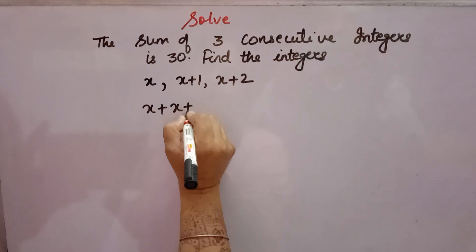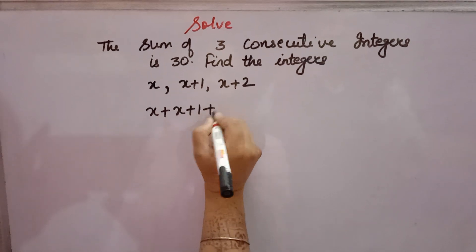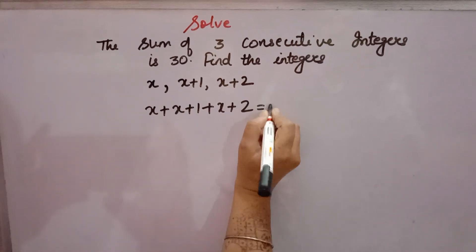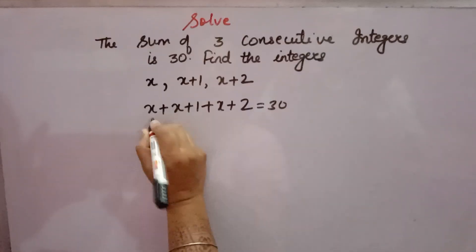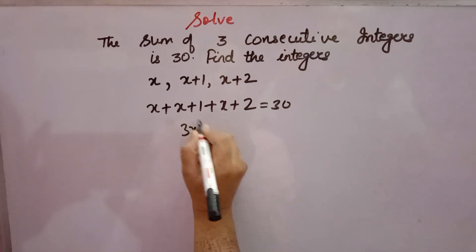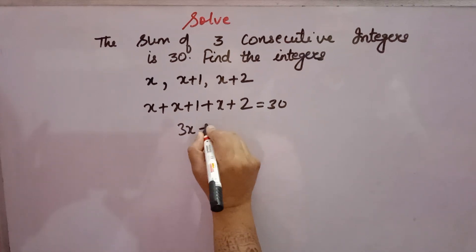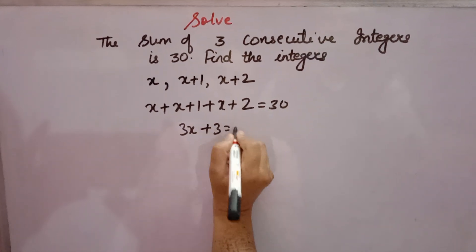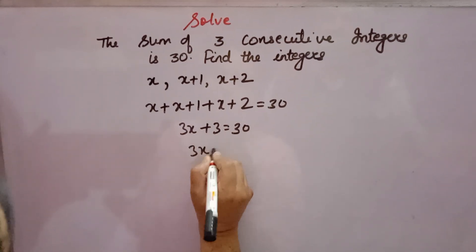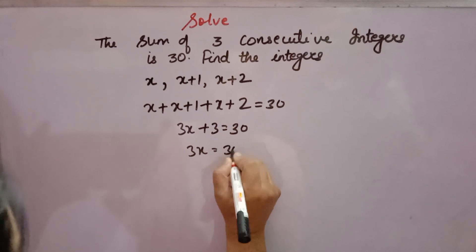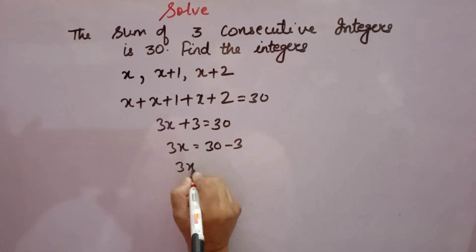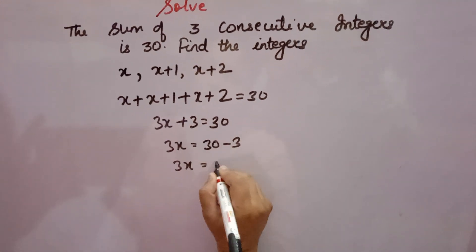So x plus (x plus 1) plus (x plus 2) is equal to 30. Combining like terms: x plus x plus x gives 3x, and 1 plus 2 gives 3, so 3x plus 3 equals 30. Therefore 3x equals 30 minus 3, which is 27.